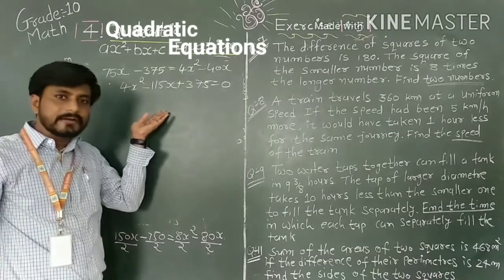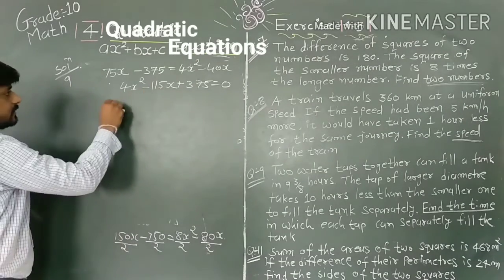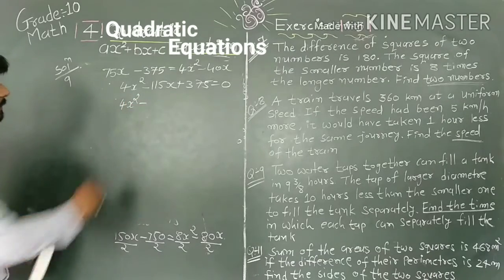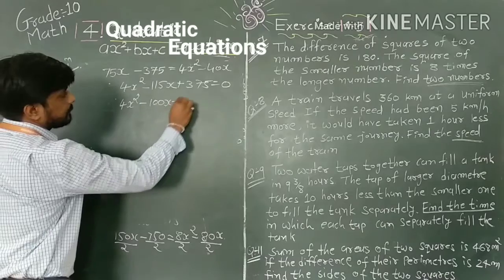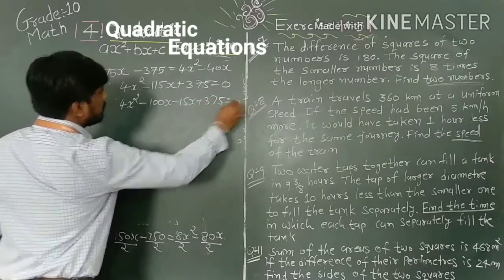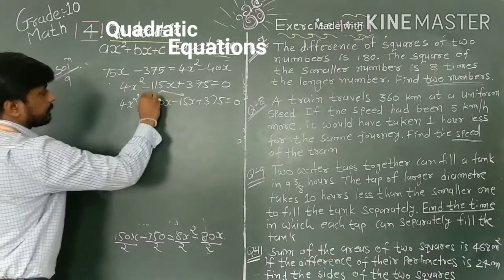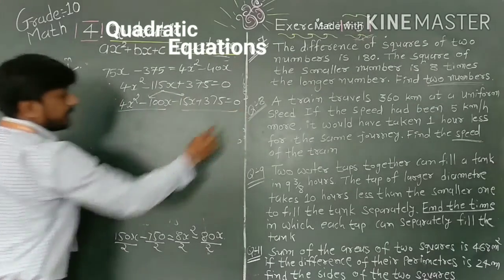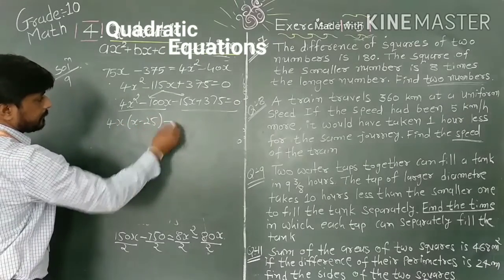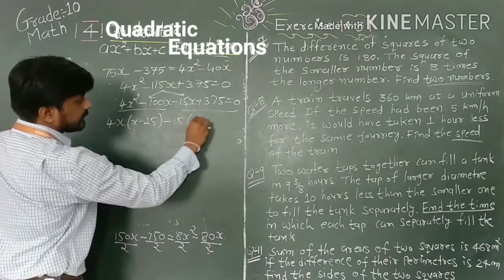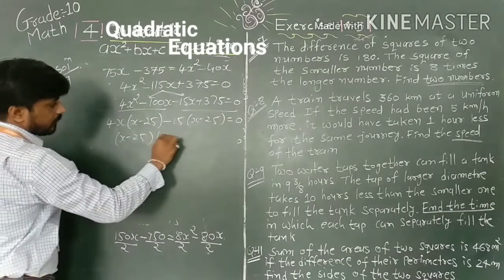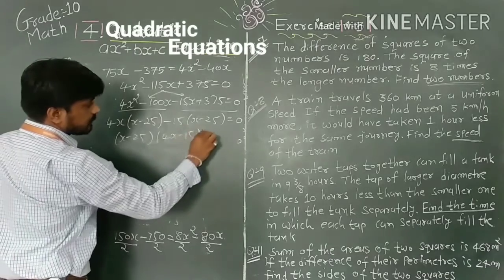By the factorization method, splitting the middle term: 4x² - 100x - 15x + 375 = 0. Taking common factors: 4x(x - 25) - 15(x - 25) = 0, giving (x - 25)(4x - 15) = 0. Therefore x = 25 or x = 15/4.